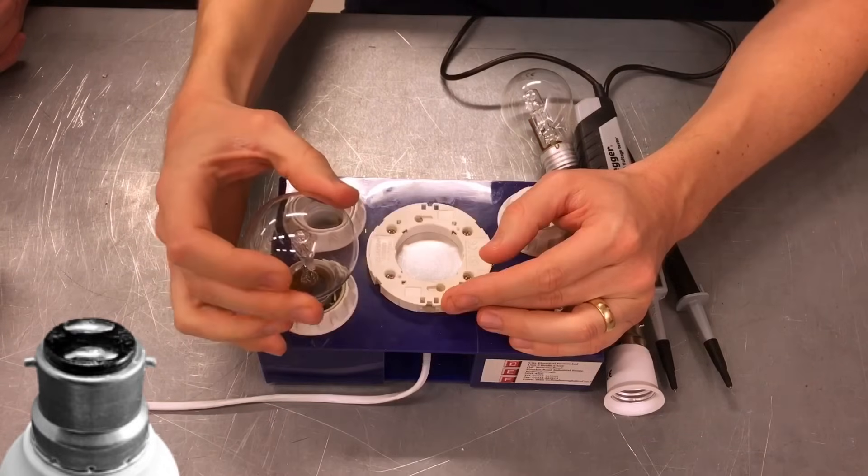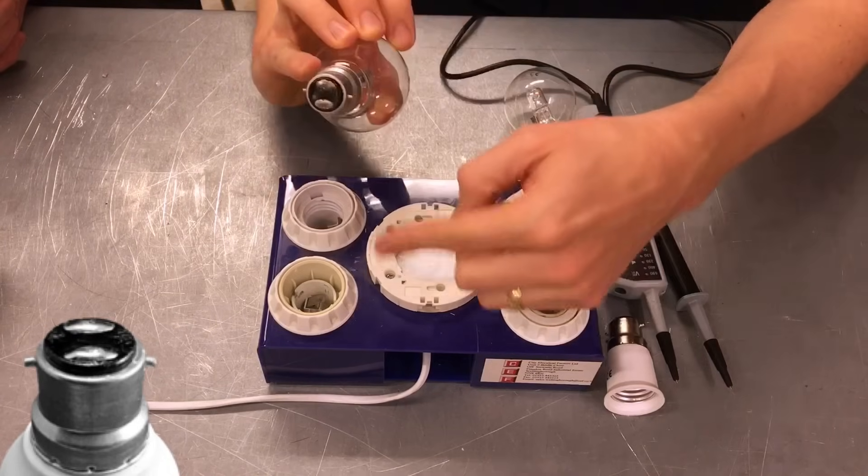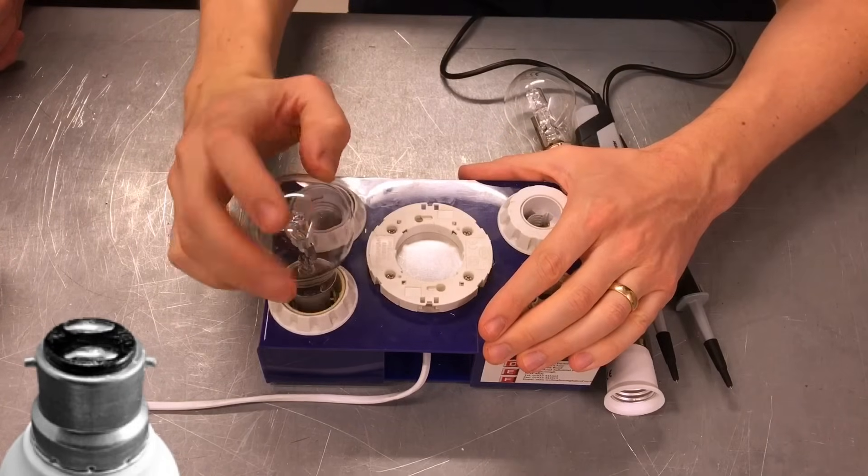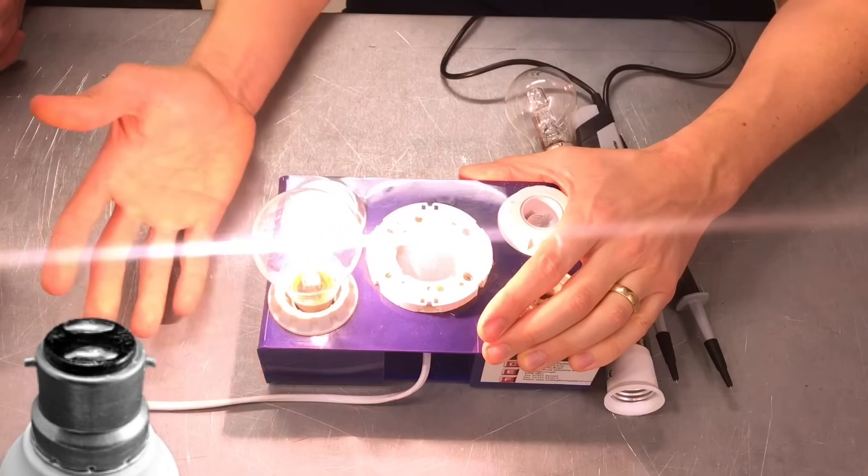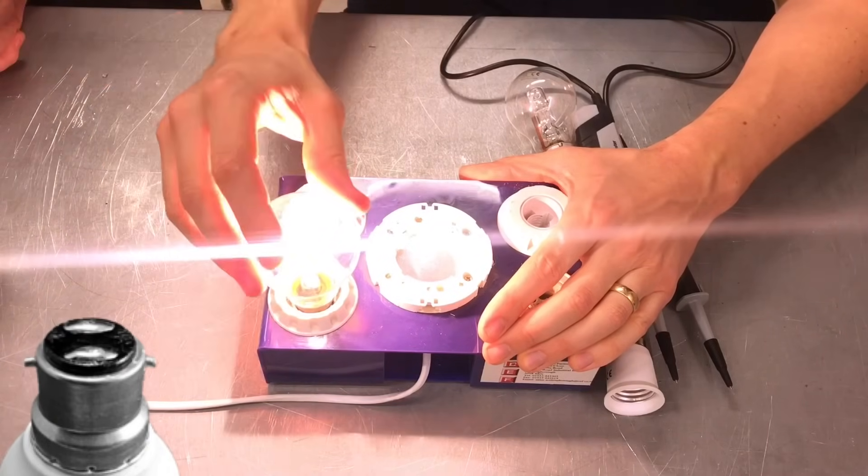It doesn't matter if I rotate that through 180 degrees, so now the pins on the bottom of the lamp are connecting onto the opposite pins that they were before. The lamp still operates exactly the same way, and that's absolutely fine. That's quite a good advantage of a bayonet cap type fitting.